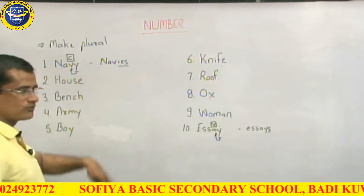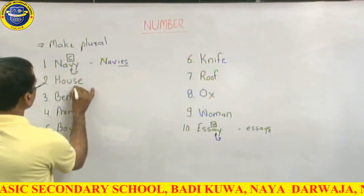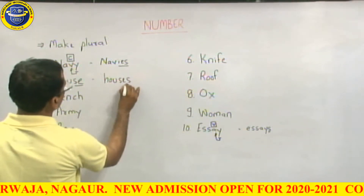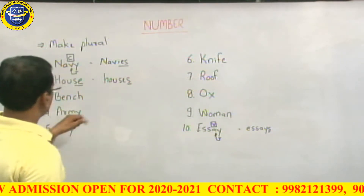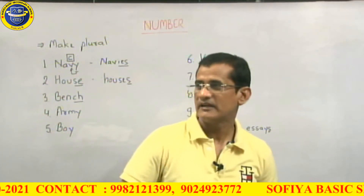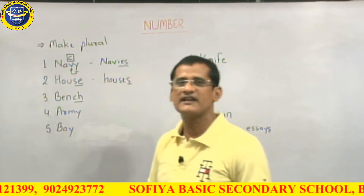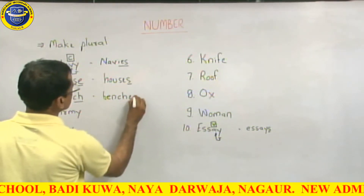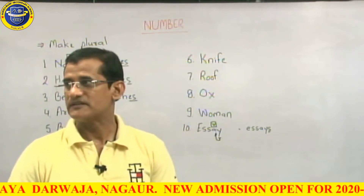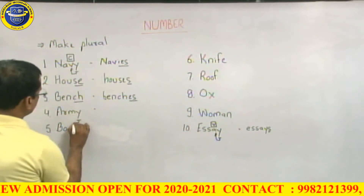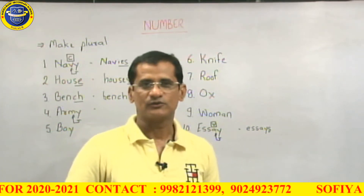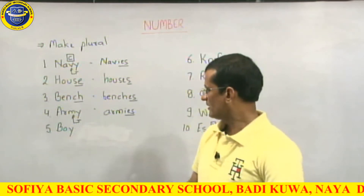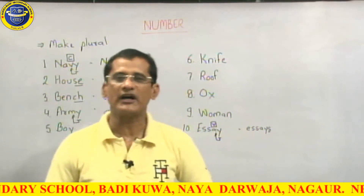Now we have House — the answer is Houses. Next is Bench. The ending is C-H, and when a word ends in S, SS, SH, CH, or X, we add E-S. So B-E-N-C-H becomes Benches. For Army, the ending M is a consonant, so we apply the rule and add E-S. For Boy, the Y ending is checked similarly.